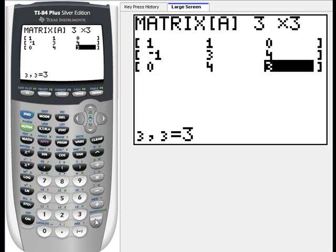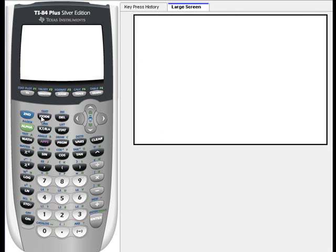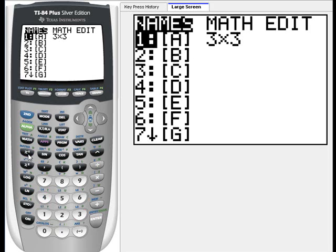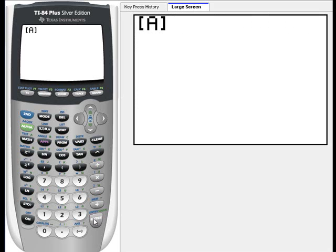Double check because it's so easy to make a mistake. Looks good. When you're done, hit second and quit to get back to the home screen. Then go back to the matrix menu. We want the name of matrix A to appear on the home screen. So hit enter. And there it is.